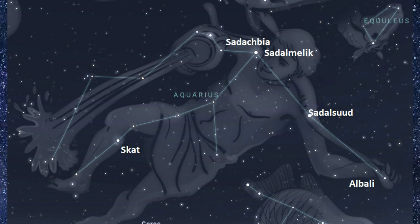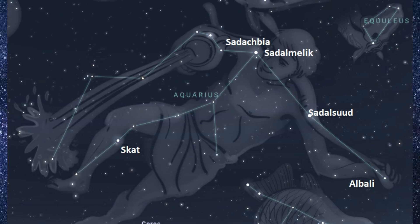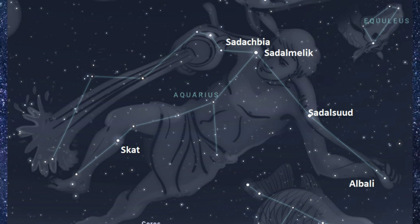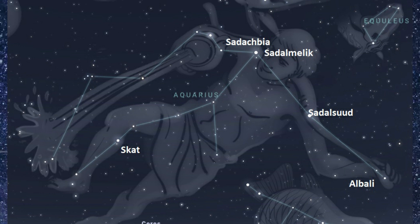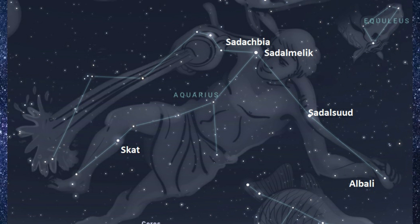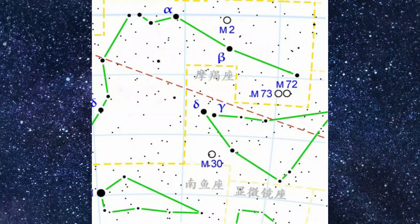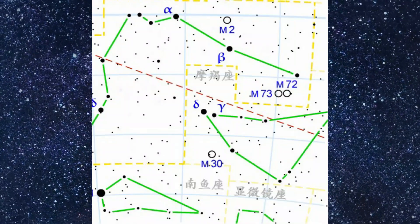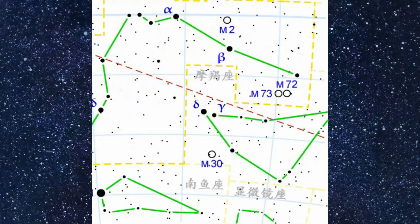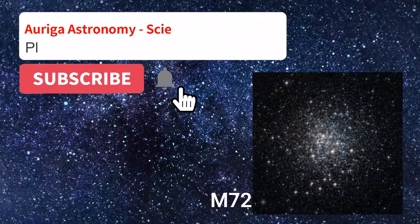The stars we can see in it are Sadal Sud with a magnitude of 2.9, Sadal Malik with a magnitude of 2.9, and Skat at a magnitude of 3.3. Al Bali has a magnitude of 3.8, and Sadachbia has a magnitude of 3.9. Messier 2 has a magnitude of 6.6. It also contains Messier 72 with a magnitude of 9.2 and Messier 73 with a magnitude of 8.9.